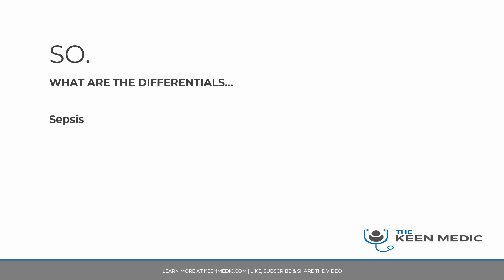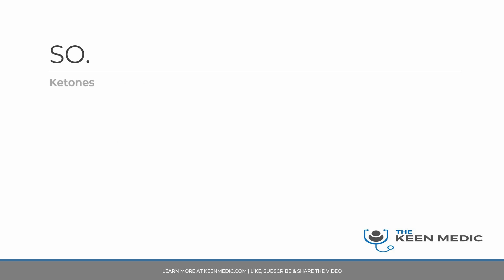So what are the differentials? Sepsis is very much a differential — he fulfils criteria: tachycardic, tachypneic, and he's immunosuppressed from his medications. But could it be a failing transplant due to an infective or vascular cause? If there's a clot in the vessels going to or from the transplant kidney, that could cause a failing transplant, which could also produce tachycardia and tachypnea.